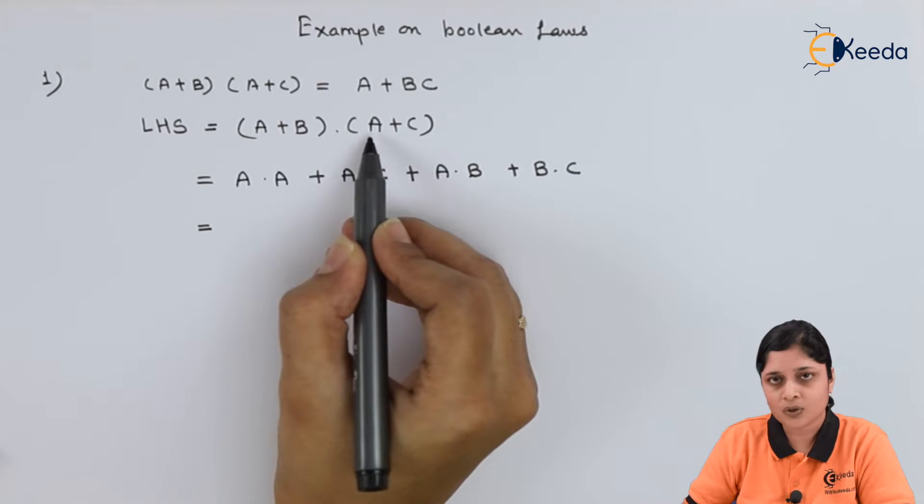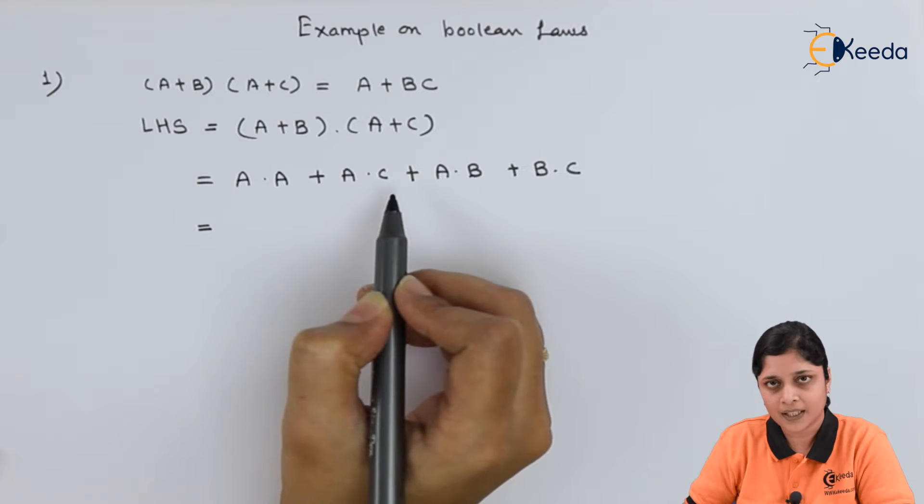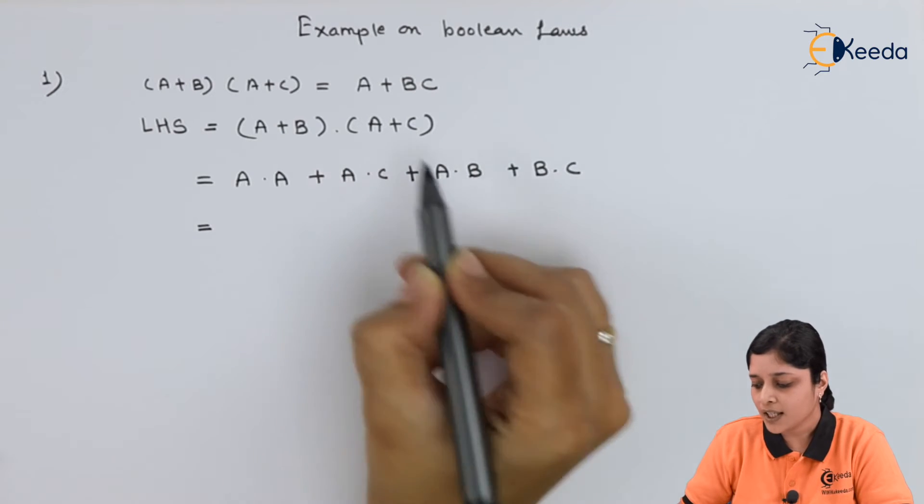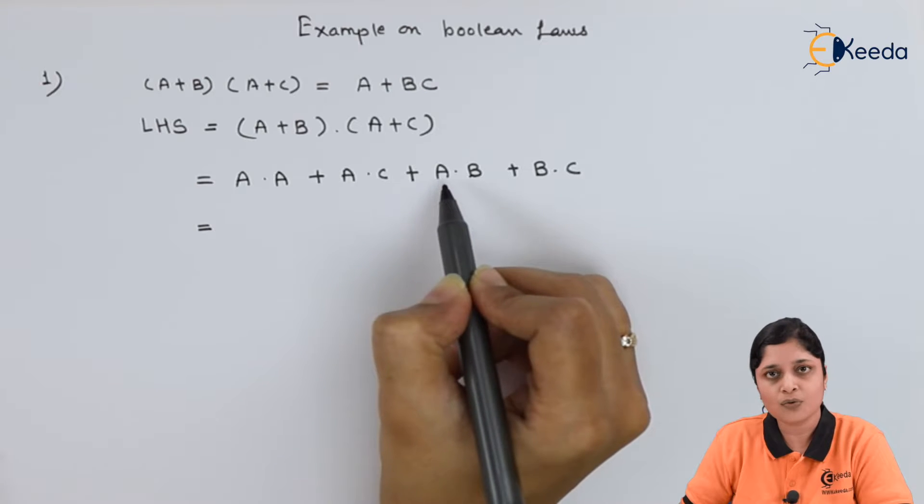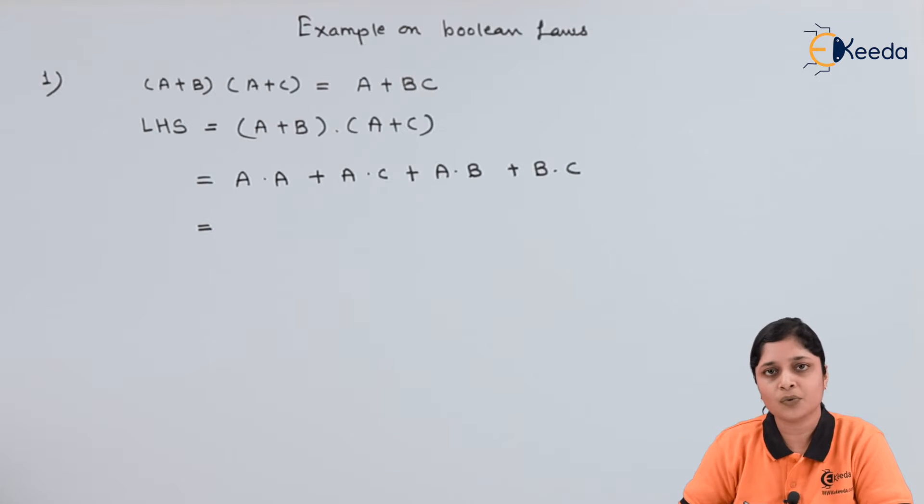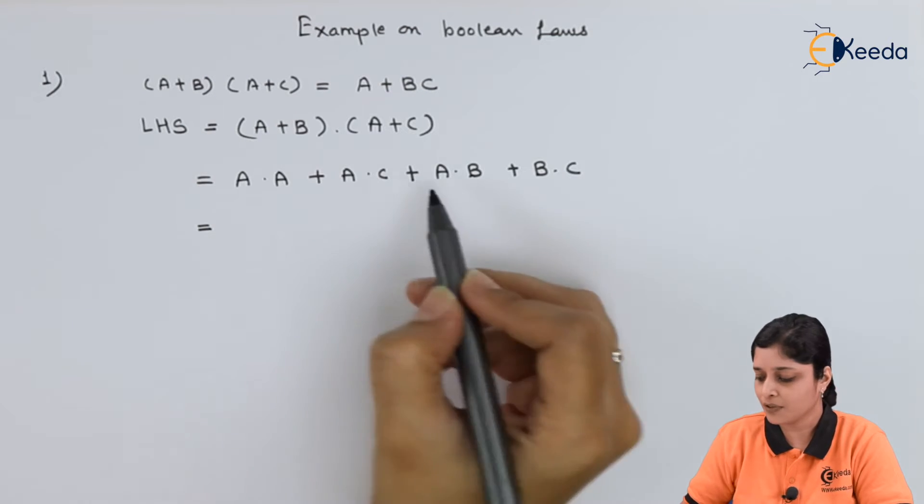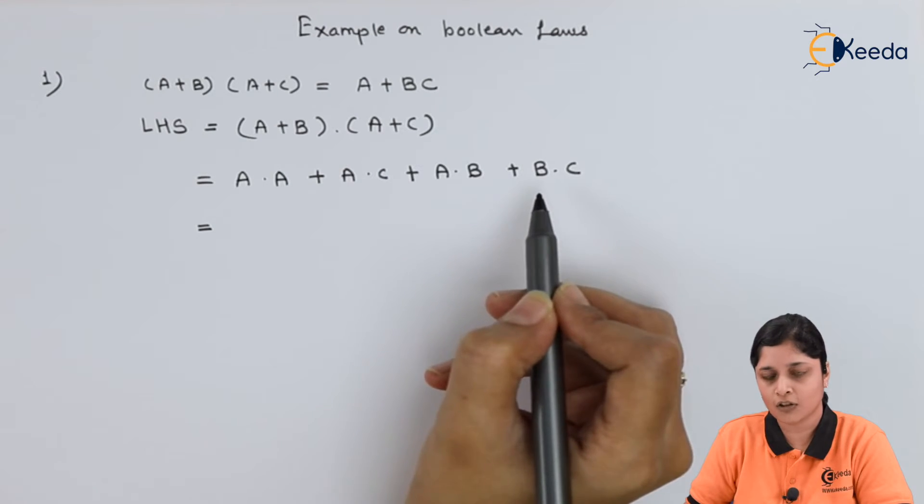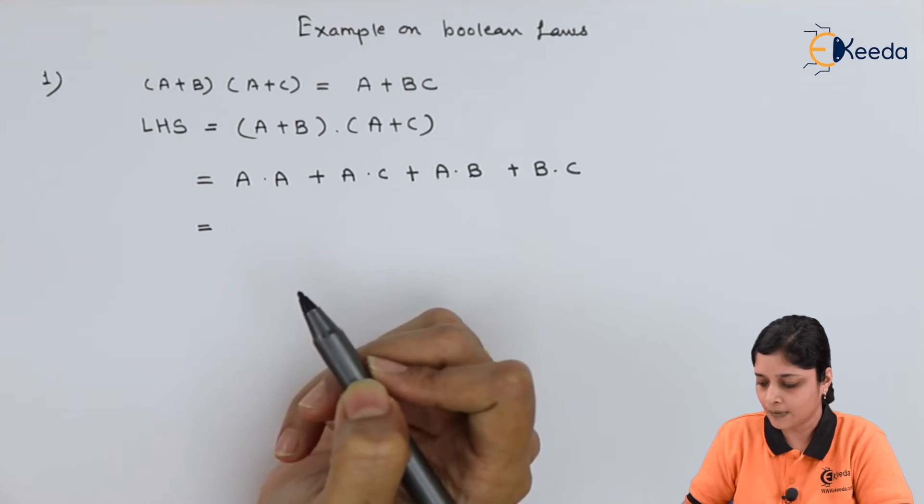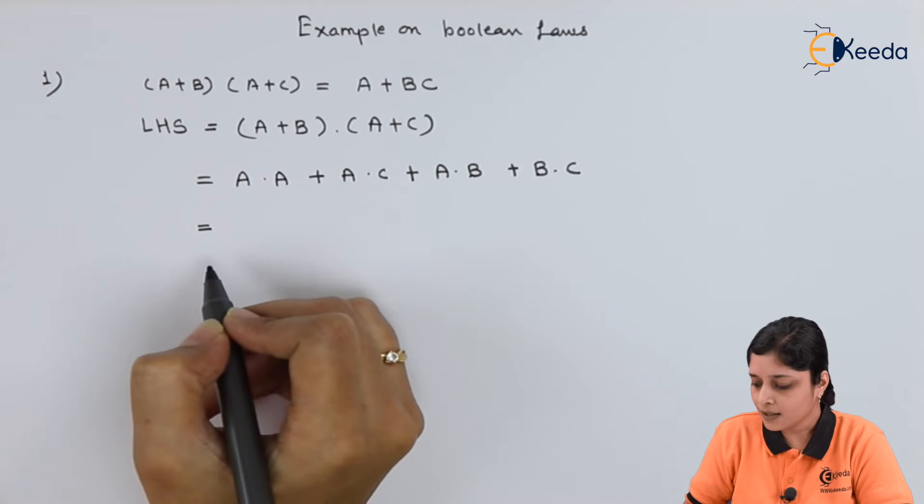Now, here B·A is also there but you have to follow the alphabetical order. B·A is always equals to A·B according to the commutative law. That's why we can write and always follow the alphabetical order while writing each term.